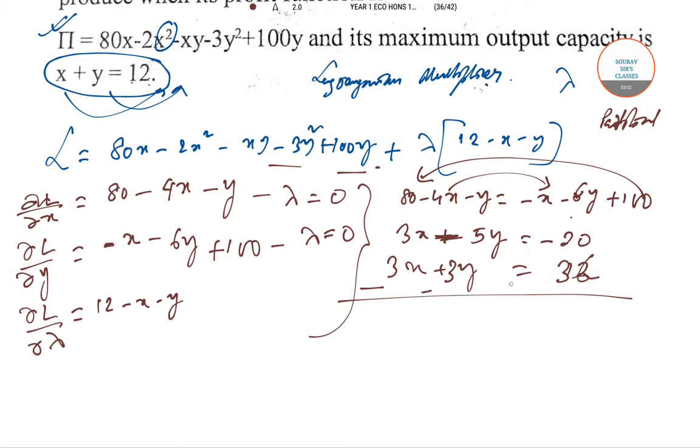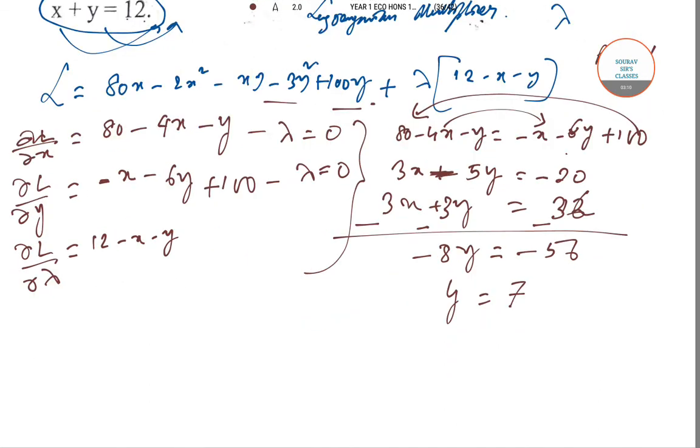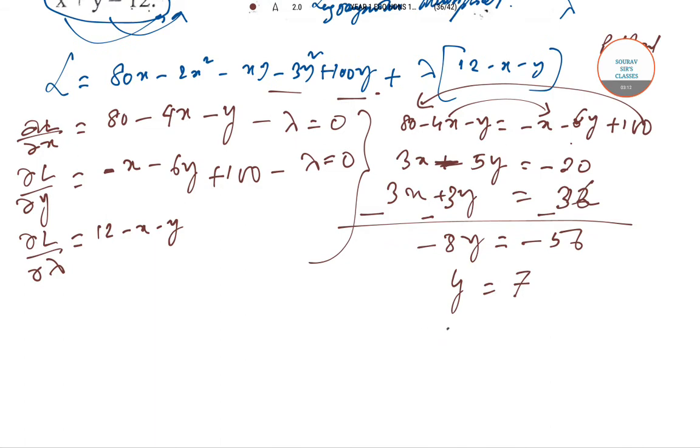Solving these equations: 3x plus 3y equals 36, so minus 8y equals minus 56, giving y equals 7. Substituting back, x equals 5.